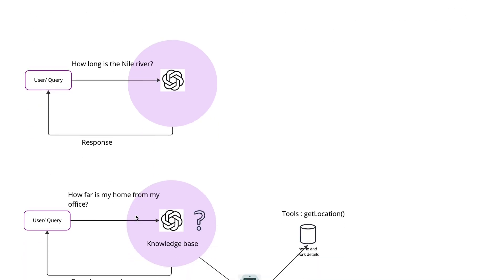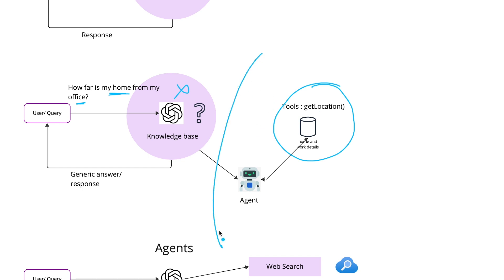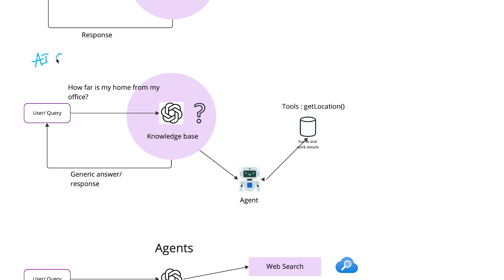But what if the user starts to ask a more personalized question, like how far my home is from my office? The LLM does not have any idea about the individual's home and office unless it has access to a specific database which holds information about that individual. Since the LLM does not have any relevant information about the individual, it starts to hallucinate and provides some generic response which is completely inaccurate. In such a case, we make use of what we call AI agents.